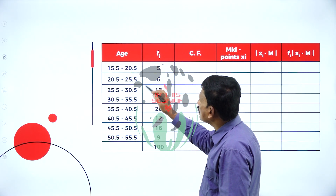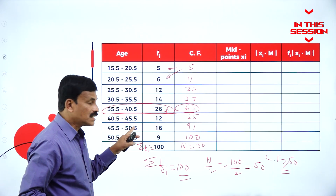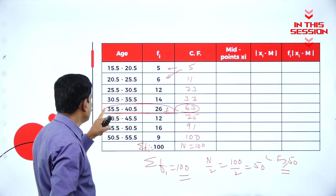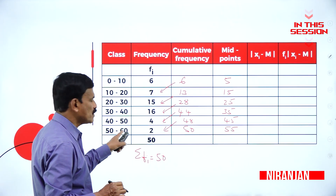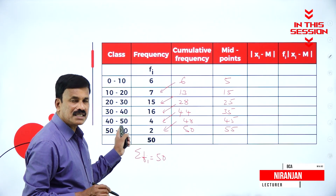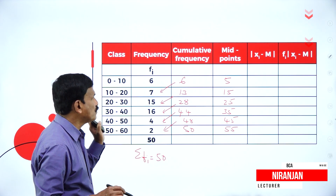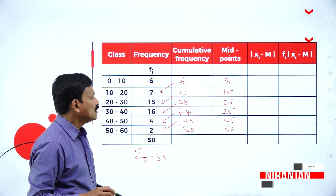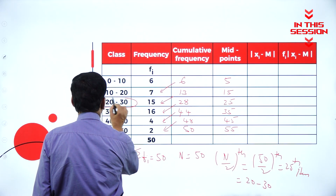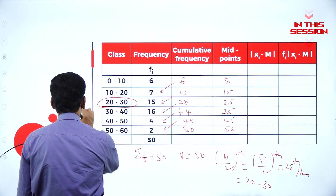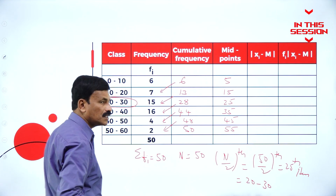What is the interval difference? The interval difference is equal to 5. Class interval is in between 35.5 to 40.5. 50 plus 60, 110 divided by 2 is 55. This is how we are going to find the midpoint. This 20 to 30 is the median class.